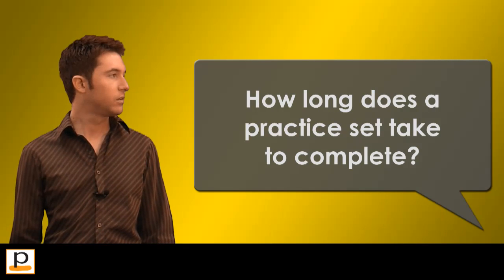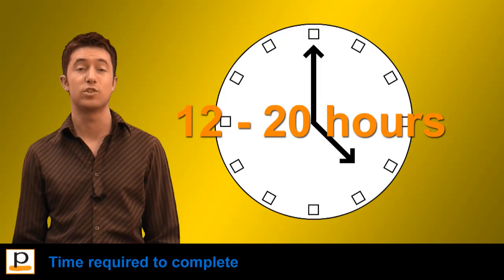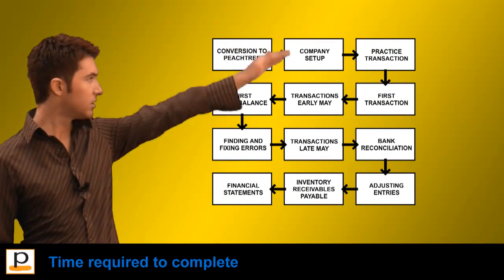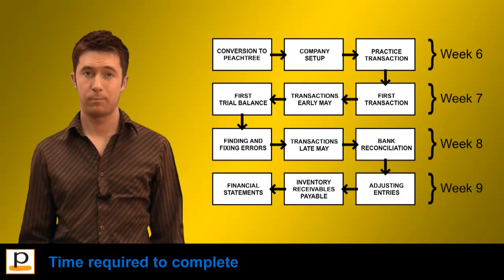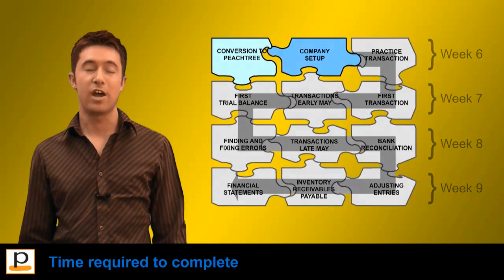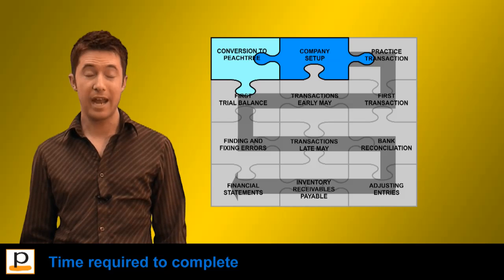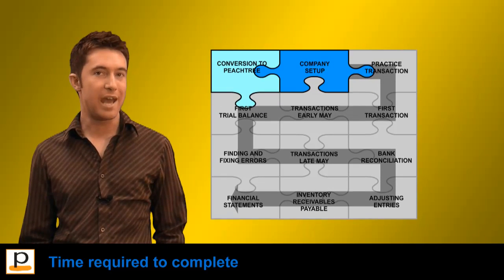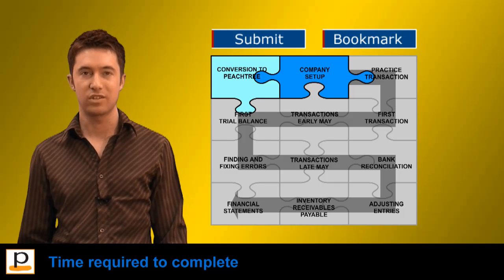How long does a practice set take to complete? The practice set can take between 12 and 20 hours for students to finish, completed across a number of pages generally over a period of weeks throughout the semester. A navigation map is provided on each page so students know where they're up to and how many study hours are likely to remain. After completing a page, students can bookmark their current position so they can return to it at a later time.